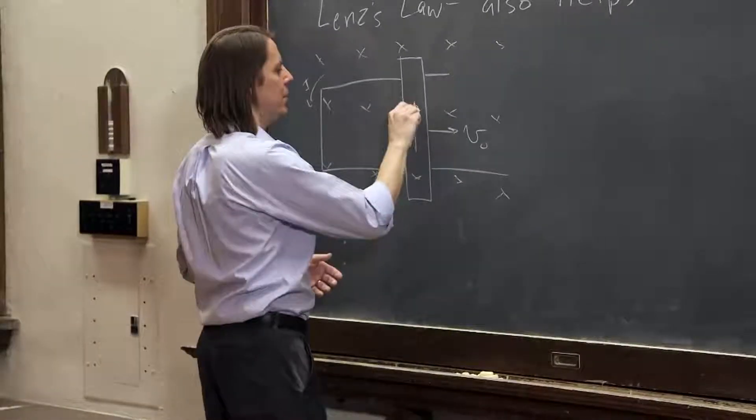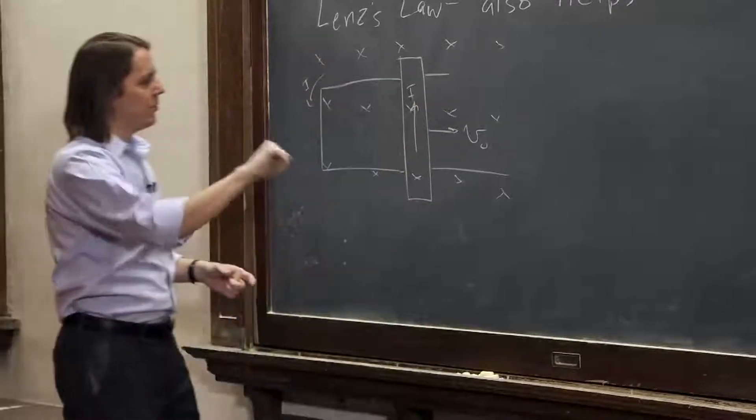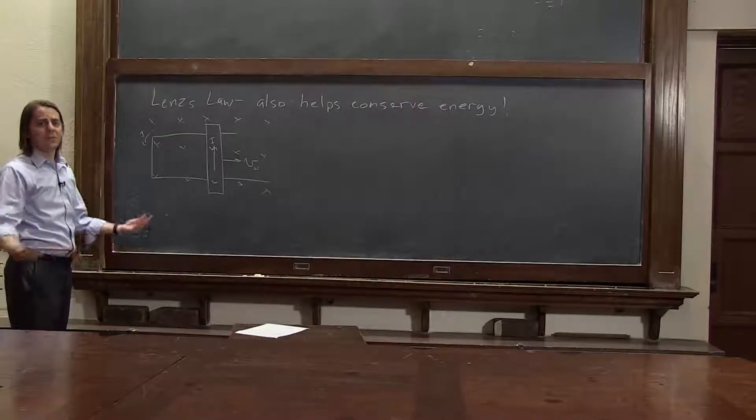The current going around this way made a current go up like that. V cross B - it opposed the motion. What if Lenz's law messed up?